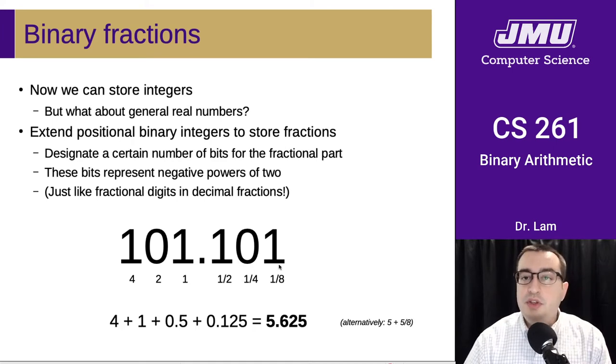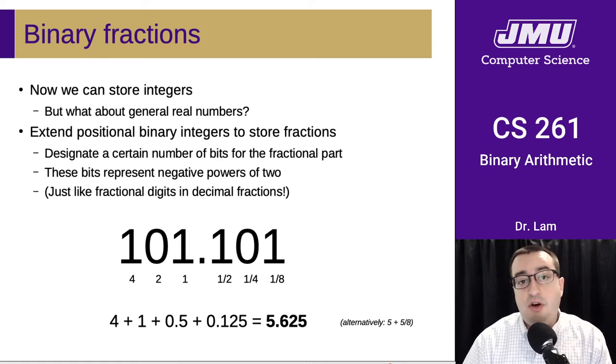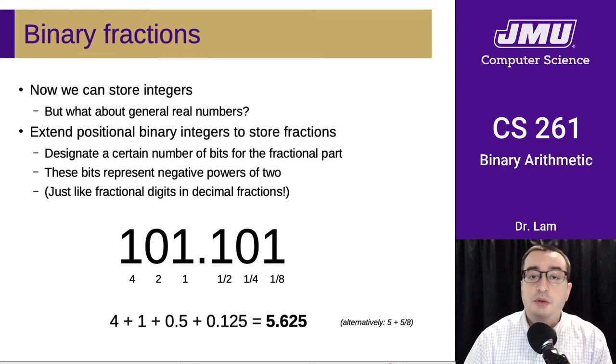And this is exactly the same as in decimal. We have the ones place. In decimal, we would have the ones place, the tens place, and the hundreds place. So in decimal, we'd have the tenths place, the hundredths place, and the thousandths place. And so the value that's represented is just the summation of all the powers of 2, and this extends our binary representation very cleanly to be able to represent fractional numbers.